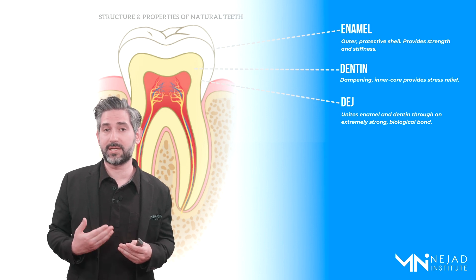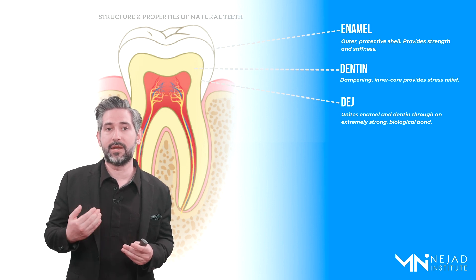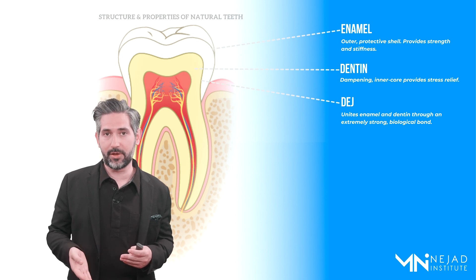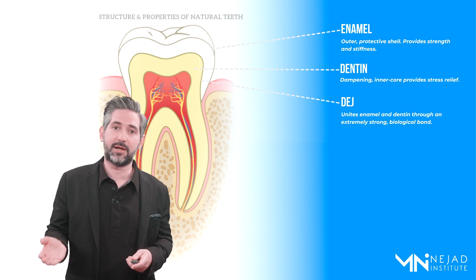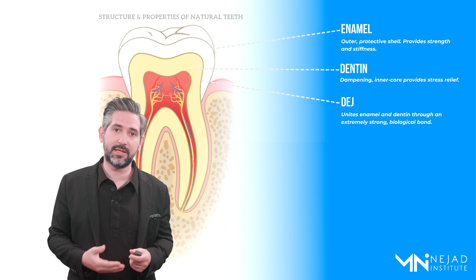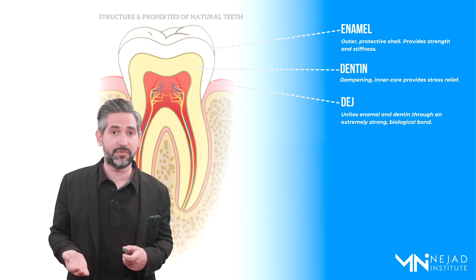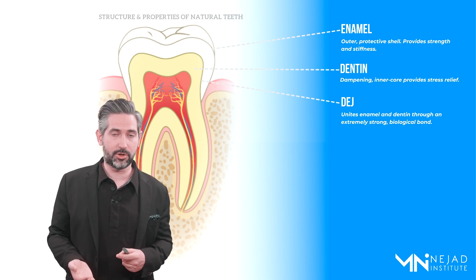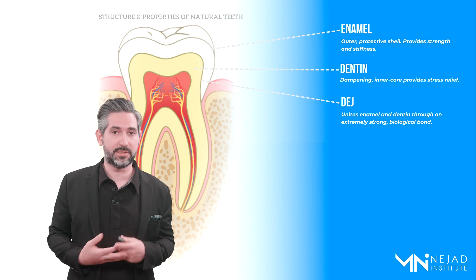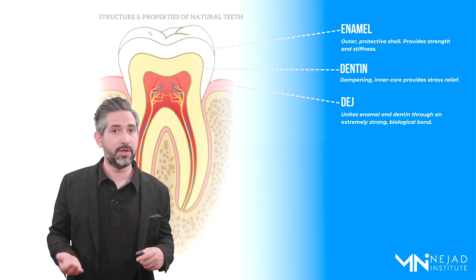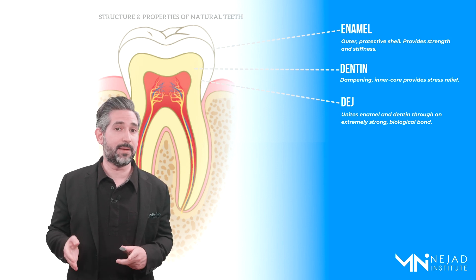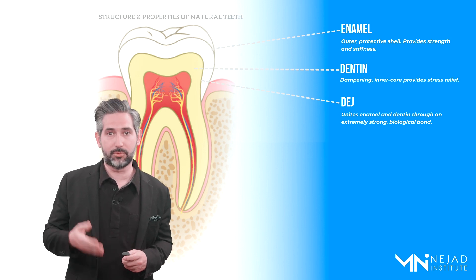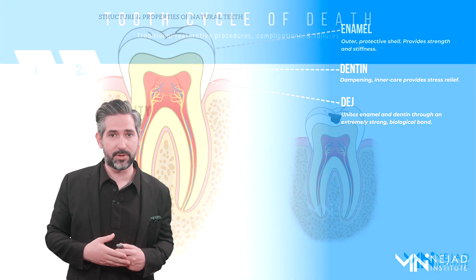If these two materials are not joined together strongly, there'll be a lot of failures and cracks and fractures. But the dentin-enamel junction forms a strong biological bond that brings these two different materials together in a way that allows stresses to flow fluidly through. If the tooth was made entirely out of enamel it would fracture and crack. If it was made entirely of dentin it wouldn't be wear resistant enough. It's the combination of properties that makes the tooth so successful — and that means when we restore the tooth, we want to mimic and restore these properties as well.